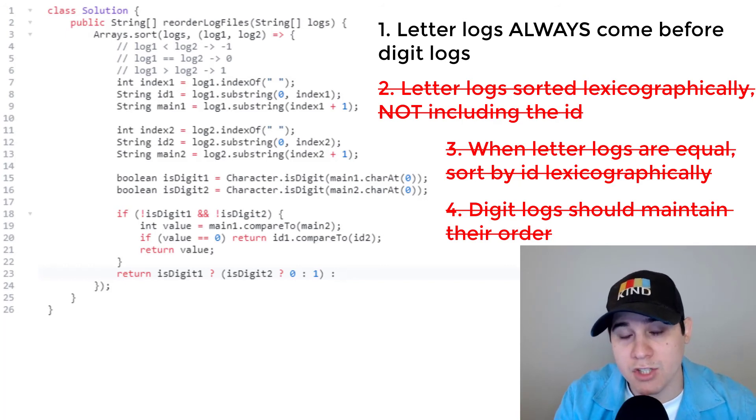And then if that whole thing evaluates to false, meaning that log one is actually a letter log, then we return negative one, because log one would be less than log two. And so that handles the rest of the rules.